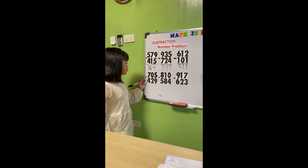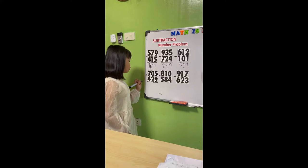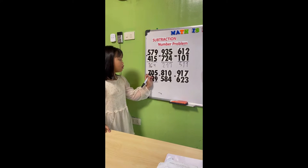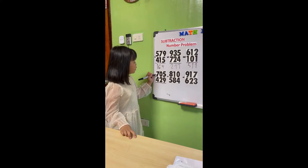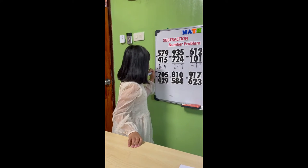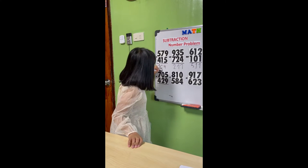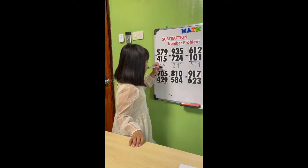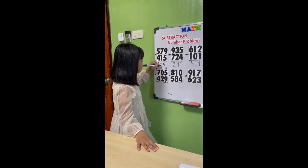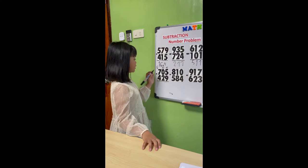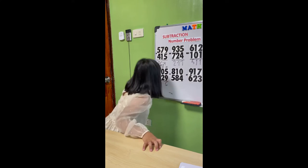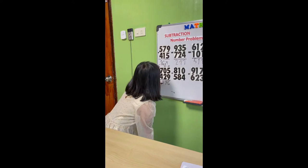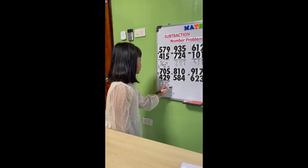705 minus 429. 5 minus 9 cannot be, so we will borrow from the hundreds. The hundreds become 6, and the tens become 10. Now that 1 will borrow to the ones, making it 15. 15 minus 9 equals 6. 9 minus 2 equals 7. 6 minus 4 equals 2. Our final answer is 276.